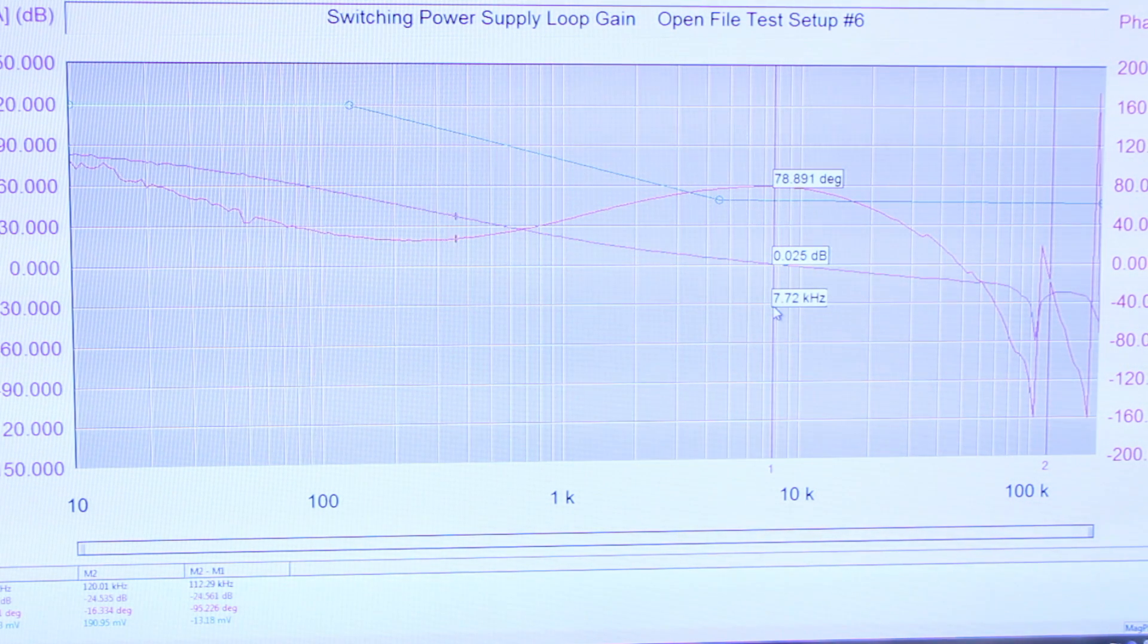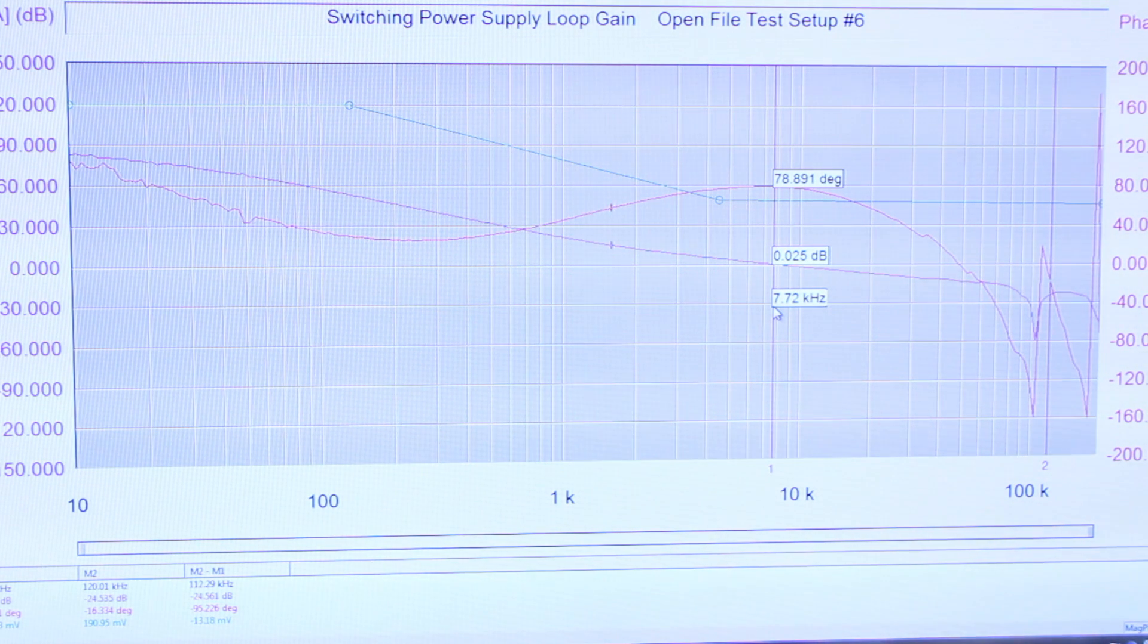And you can see we've got 0 dB of gain with 7.7 kilohertz crossover frequency and 78 or 80 degrees of phase margin. So that's a pretty good rugged loop for our switching power supply.